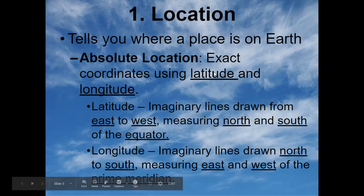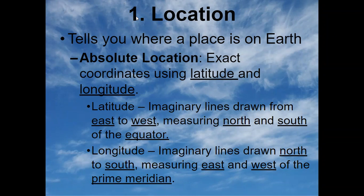The first theme of geography is location. Location tells you where you are on the globe, and there are two types of locations. The first is absolute location, and it tells you exactly where you are using latitude and longitude. Latitude is the imaginary lines drawn from east to west, and they measure north to south.